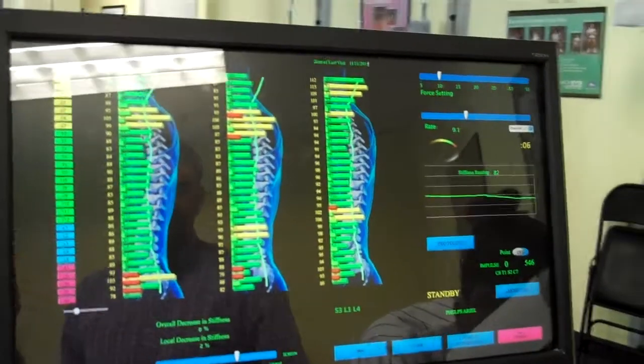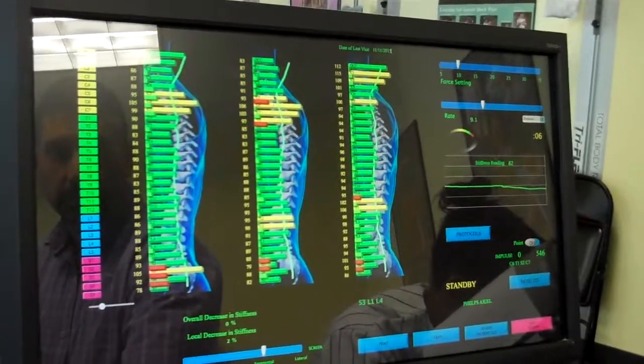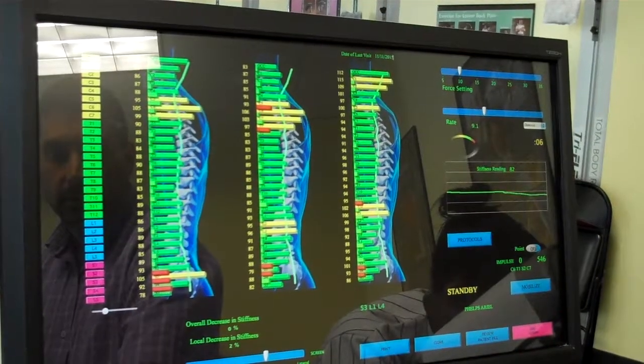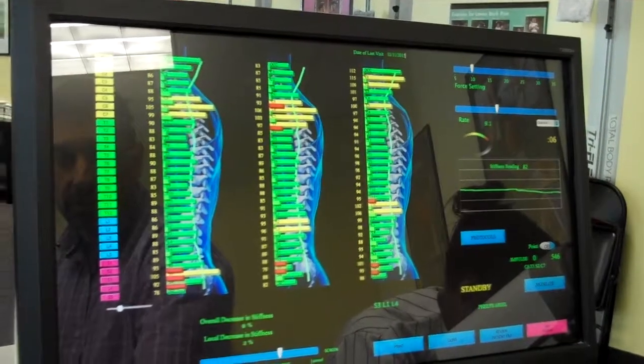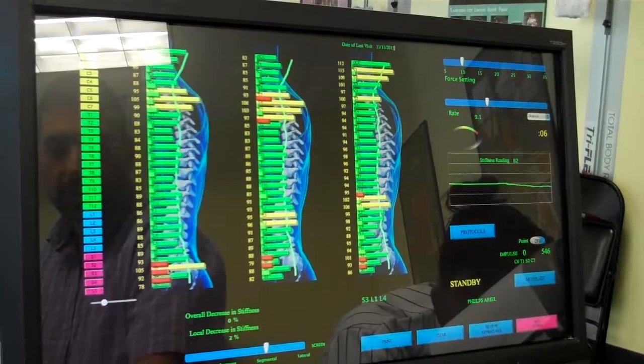So what we see here in Ariel's case is that most of the cervical component, this was the first scan today, has resolved. There's still some muscle tension in there, but you can see here the sacral area has not.